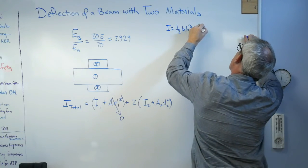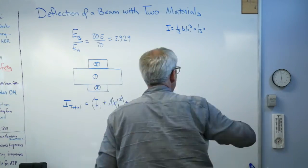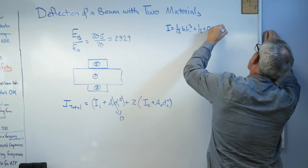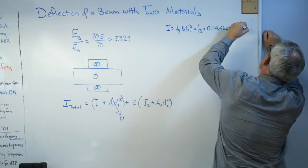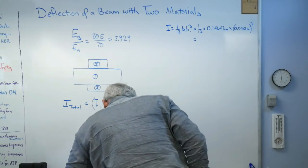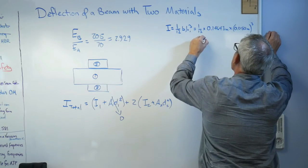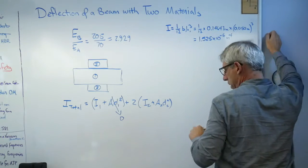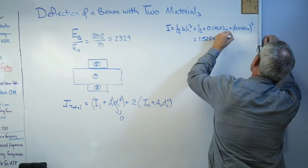Well, I1 equals 1/12 B1 H1 cubed. So that's one over 12. Now, if you multiply 50 times 2.929, you'd get 146.43. And I got to do this in meters. So 0.14643 meters. And the height hasn't changed any. So 0.050 meters and cube that. And if you do that, you get, sorry, I have to look this up, 1.525 times 10 to the minus six meters to the fourth.